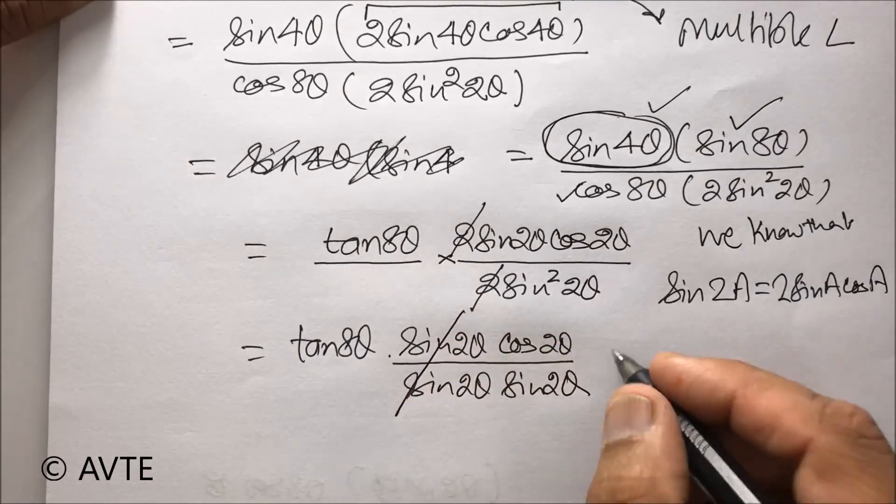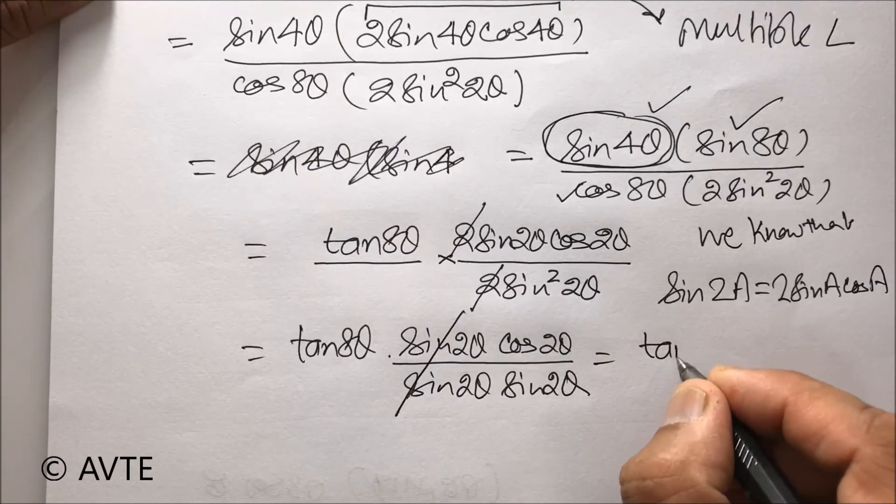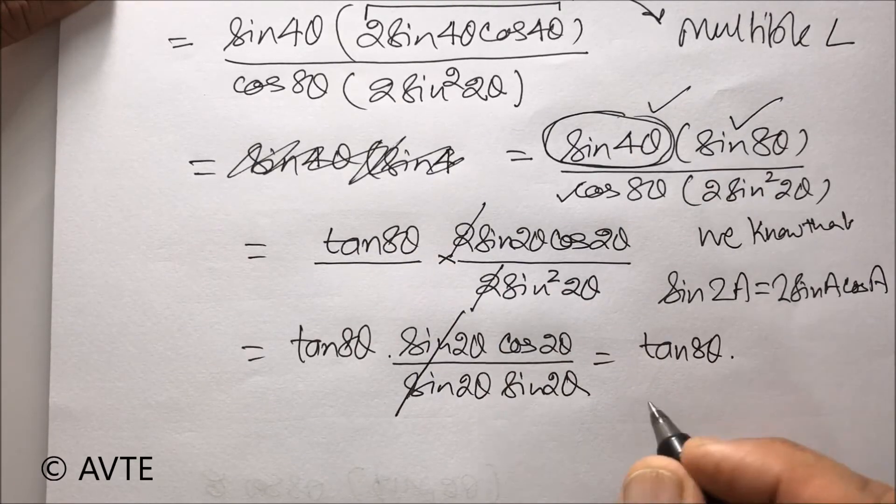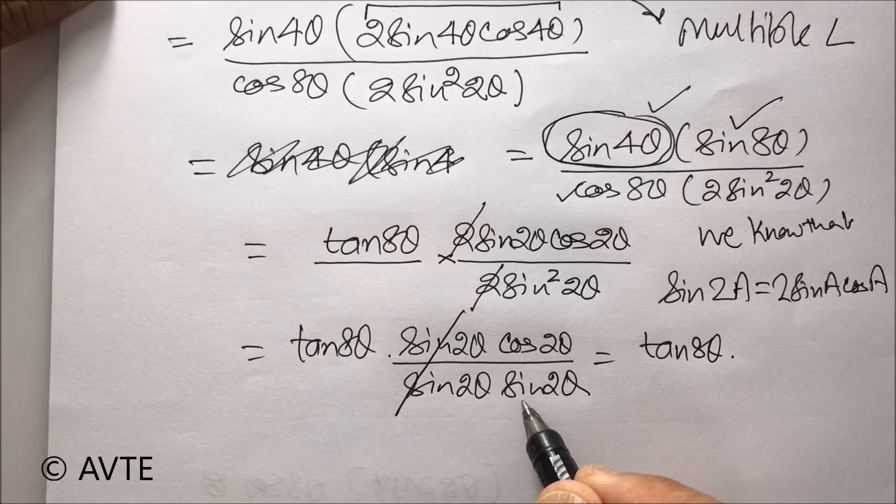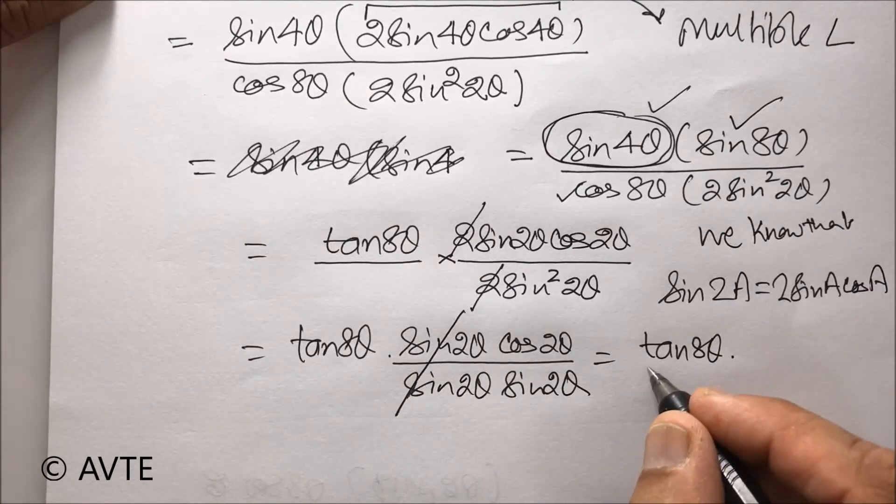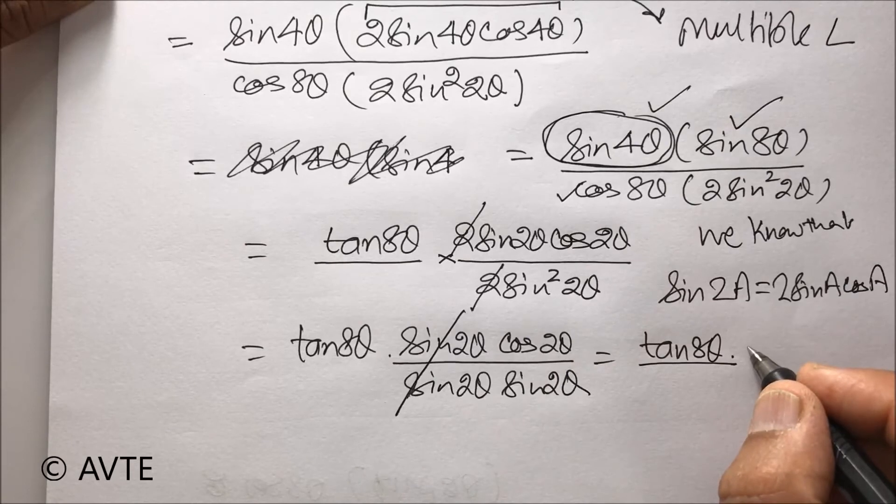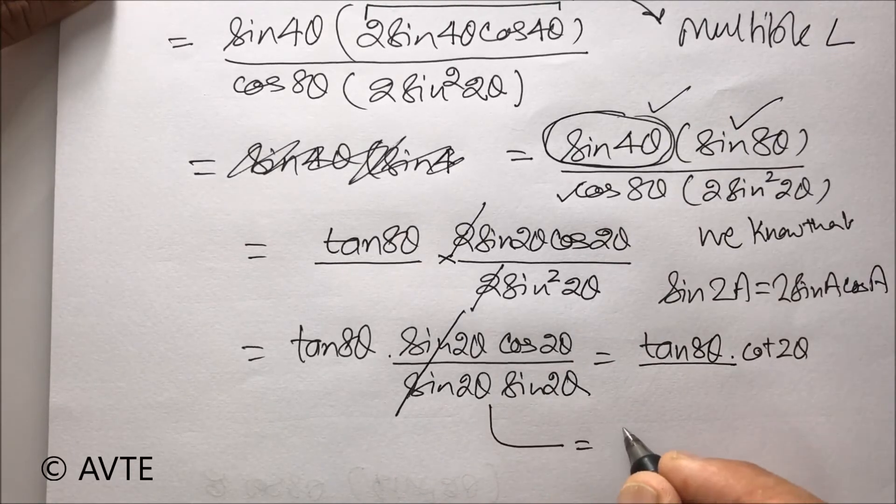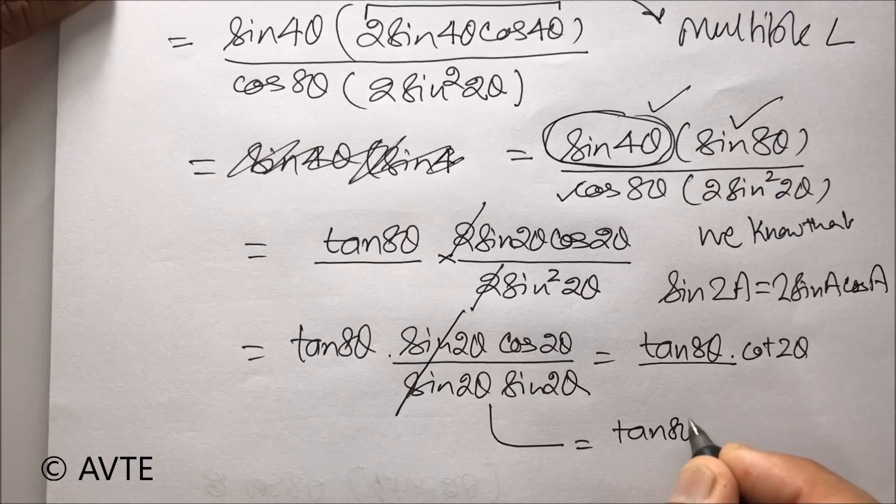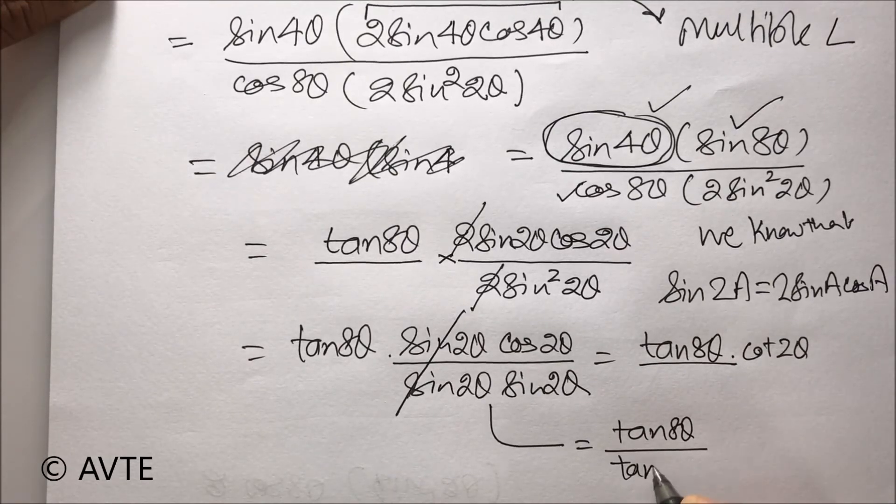If you are good at maths, you can skip few steps. But, we are writing each and every step. So, can you see that this is tan 8 theta with cos upon sine? So, you can directly write that cos upon sine is cot 2 theta. Or, you can take it directly to tan 8 theta divided by tan 2 theta.